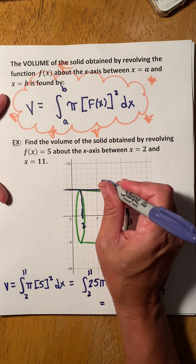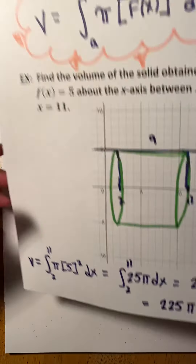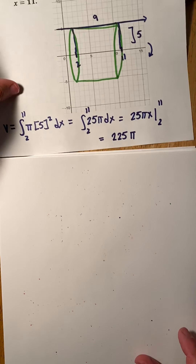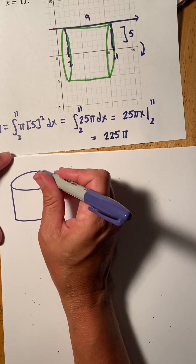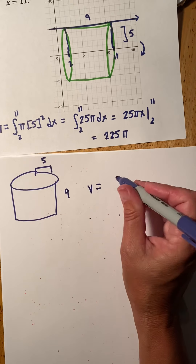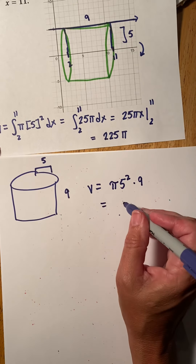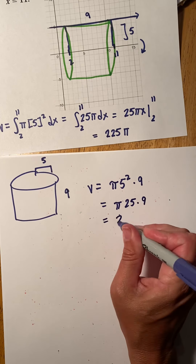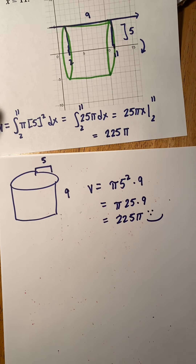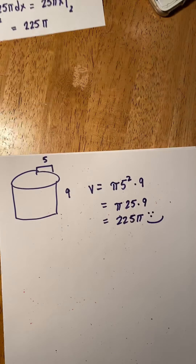Notice this is just a cylinder of height 9 and radius 5. Using geometry: V = π r² h = π(25)(9) = 225π. This confirms the formula. But not all functions are constant — this template allows us to rotate any function and determine the volume of the resulting solid.